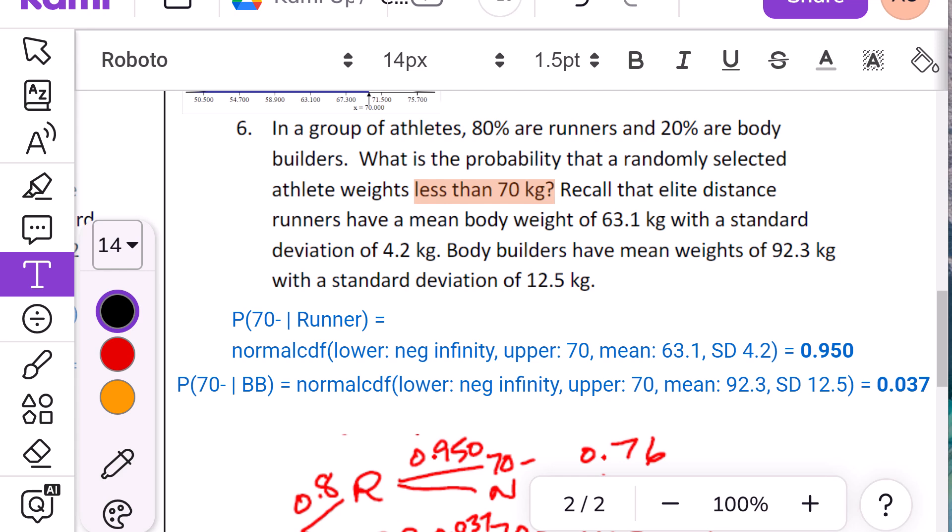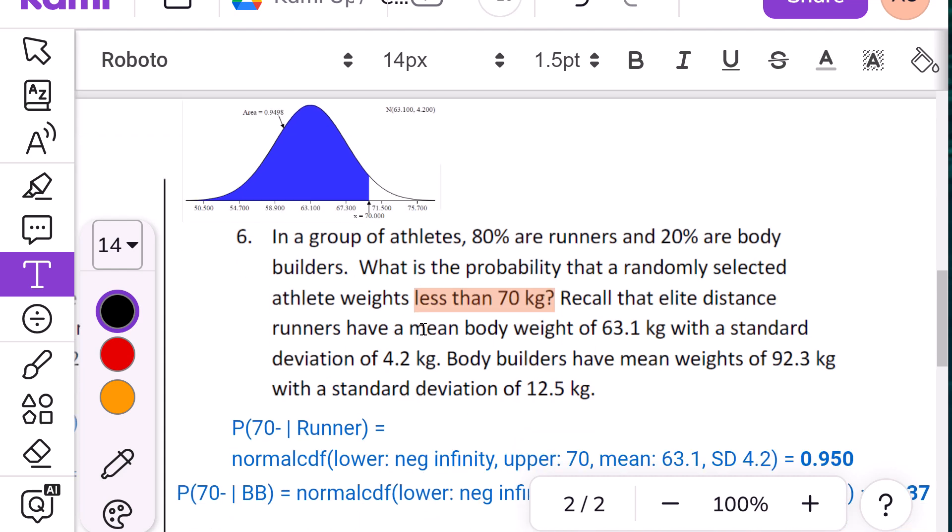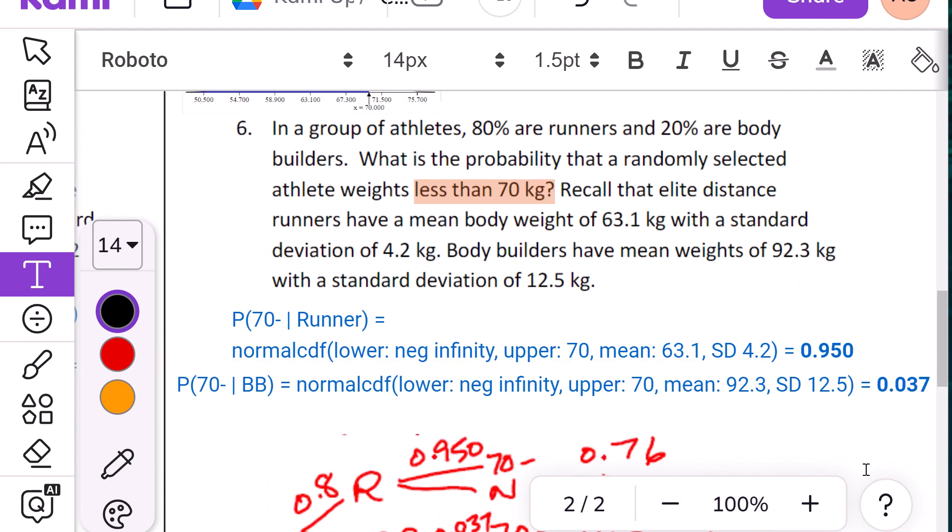I would also calculate that probability for bodybuilders. So you can see these two lines. They're pretty much identical for both the runner and the bodybuilder, except for one thing, the mean weight and the standard deviation of the weight. So I'm going negative infinity to 70 for both of them. So I'll have a drawing kind of like that. That's a low body weight. And then put in the appropriate mean and standard deviation. And that's a probability that a runner weighs that much. And that's a probability that a bodybuilder weighs that much.